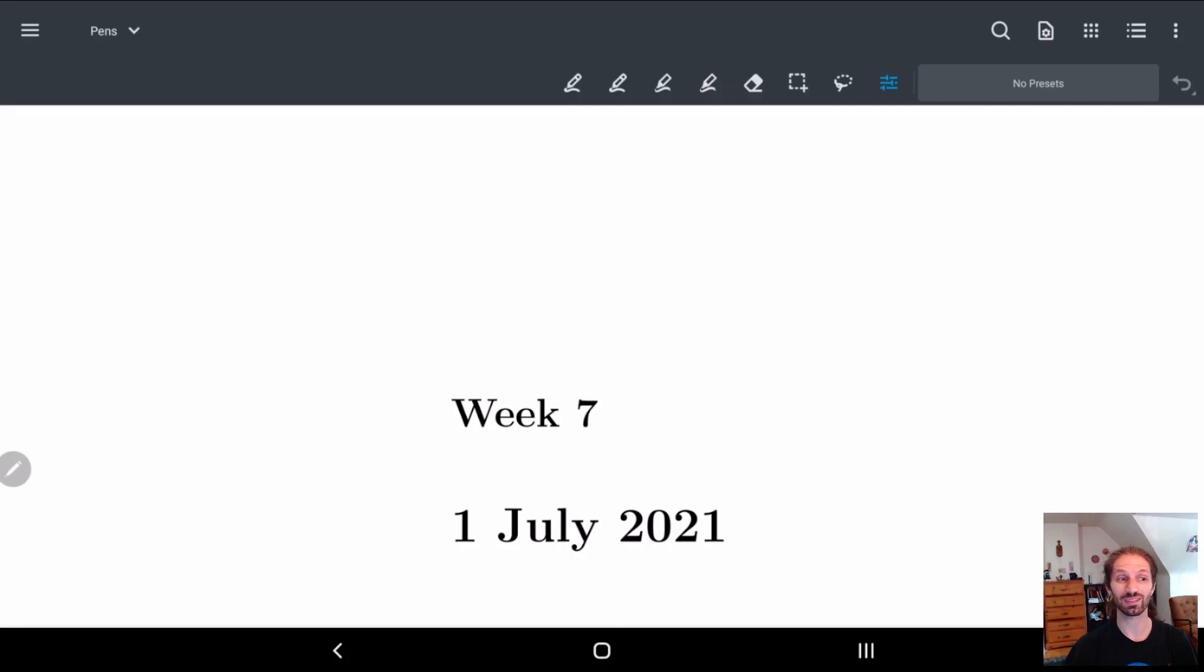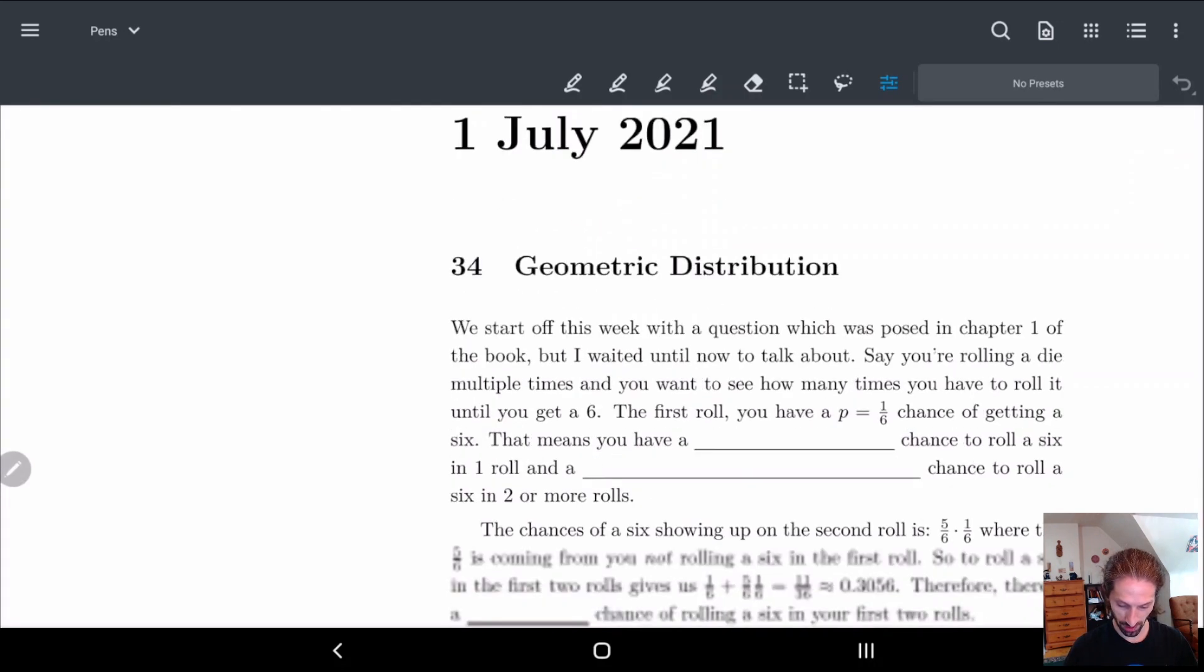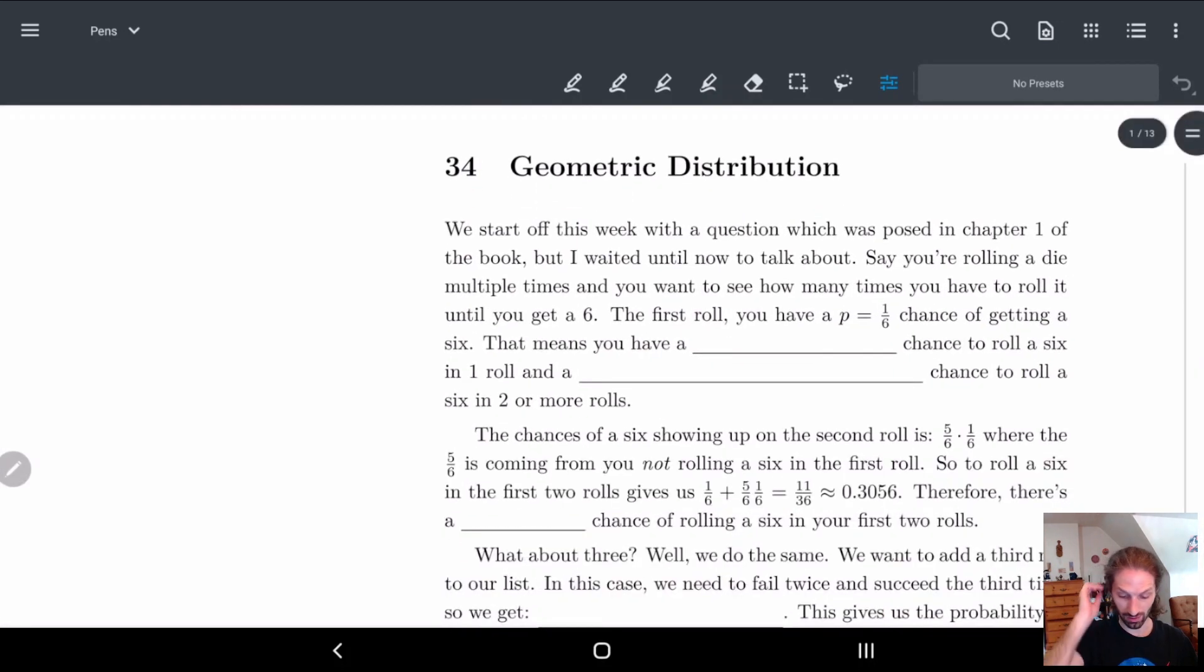Hi everyone, welcome to week 7. We're going to start off today with the geometric distribution, something nice and easy theoretically - just a new distribution idea. This is something that actually was posed in chapter 1 of the book, they did this at the very beginning, but I waited until now to talk about it because it didn't really fit in with a lot of the things that we're doing.